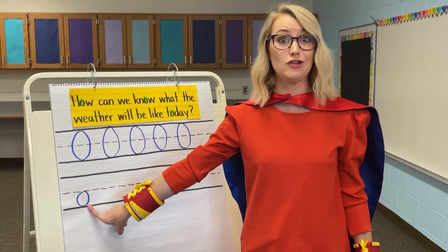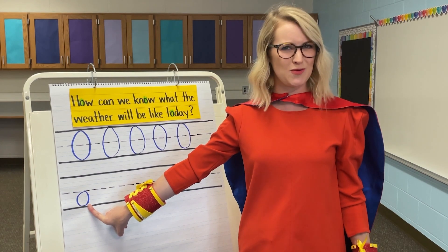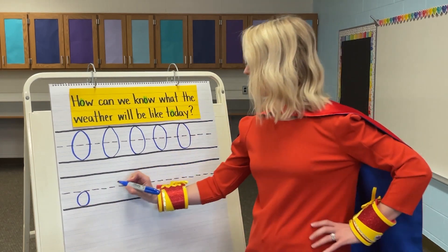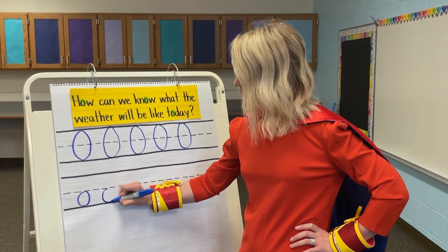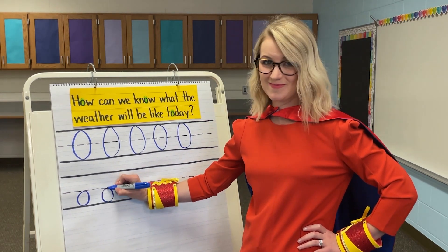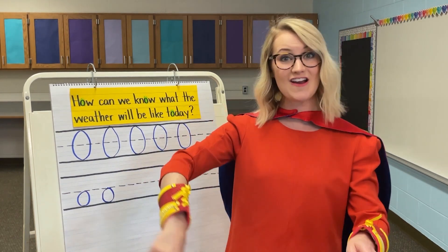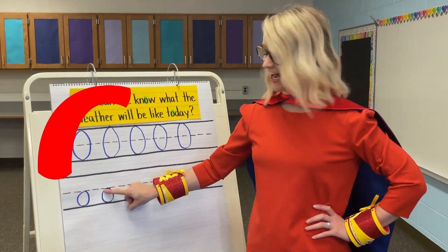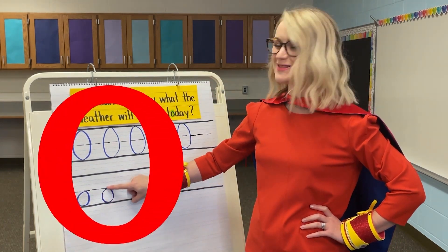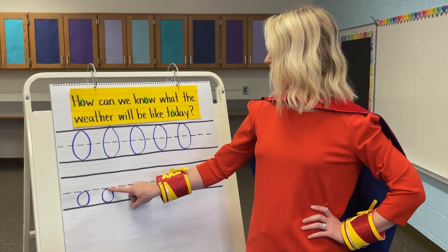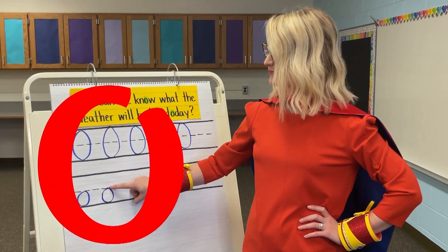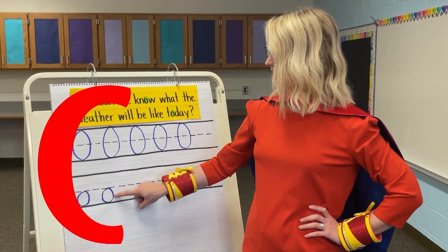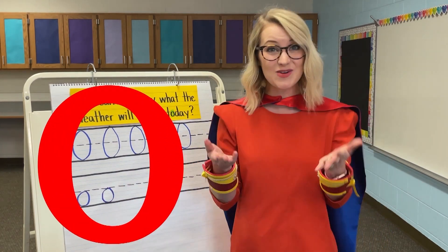Now we're going to learn how to write our lowercase O. Watch me write it and then we're going to trace it before we write it ourselves. We're going to start in the middle, go down, around, and back up to the middle. Put your finger in the air and trace it with me. Start in the middle, go down, around, back up to the middle. Do it again — start in the middle, go down, around, back up to the middle. One more time — start in the middle, go down, around, back up to the middle. Okay, now you're ready to write.